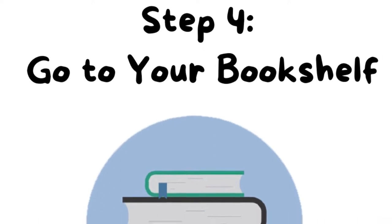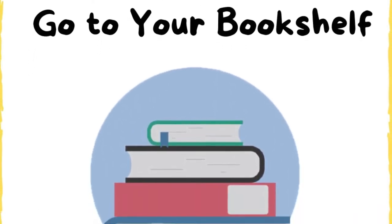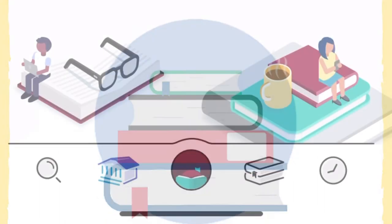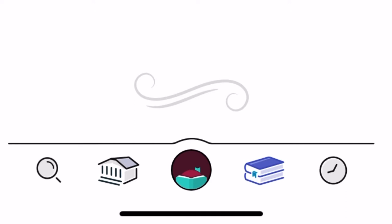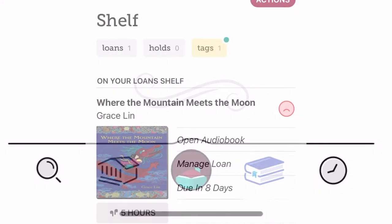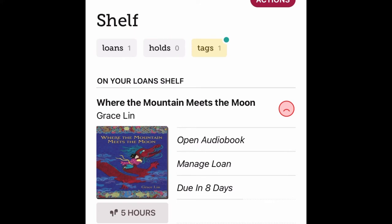Step 4: Go to your bookshelf. At the bottom of your screen, you will see a stack of books to the right of the round center button. This is your bookshelf, where you can find your currently borrowed items. After clicking the icon, you should see a list of your loans, including anything you may have borrowed on your computer at liveberry.overdrive.com. The app and the website are linked through your account, allowing you to access the same items both on your computer and on the go. If you have not borrowed any items, your shelf will be empty.